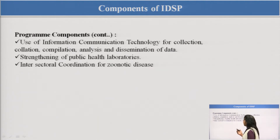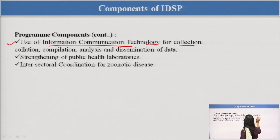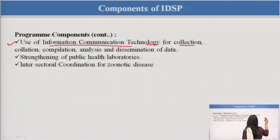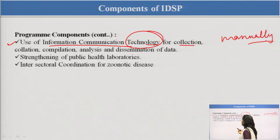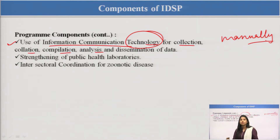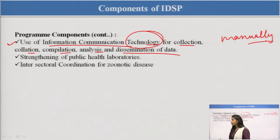Apart from these components, there is also the use of ICT — information and communication technology — for data collection. Previously, data was collected manually. Now, technology-based systems with different software make data analysis and compilation easy. We use information and communication technology for collection, compilation, analysis, and dissemination to the public — for example, whether disease numbers are rising or decreasing — and to evaluate whether our plans are working well.